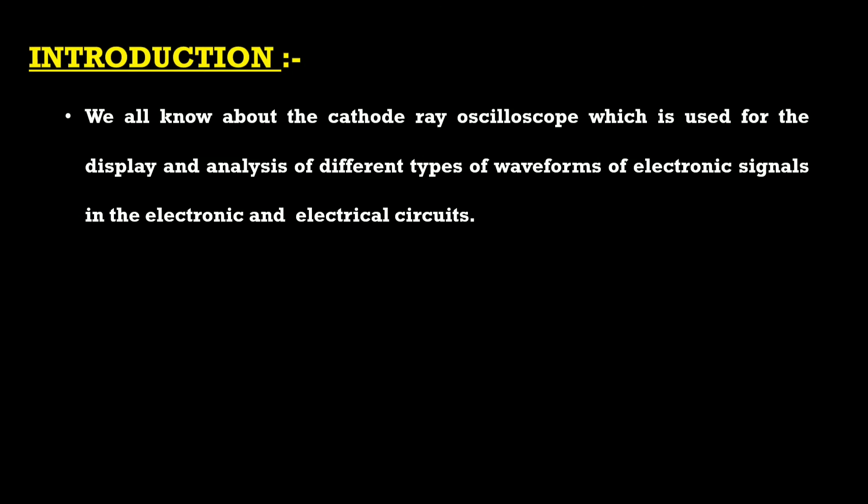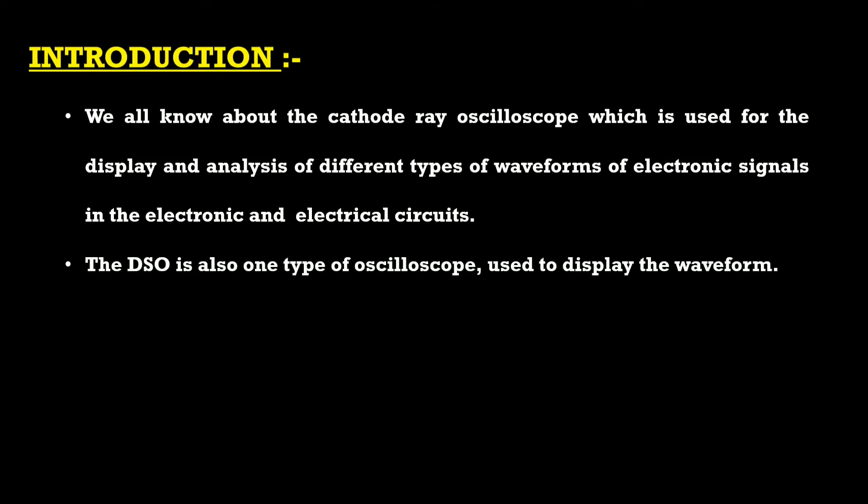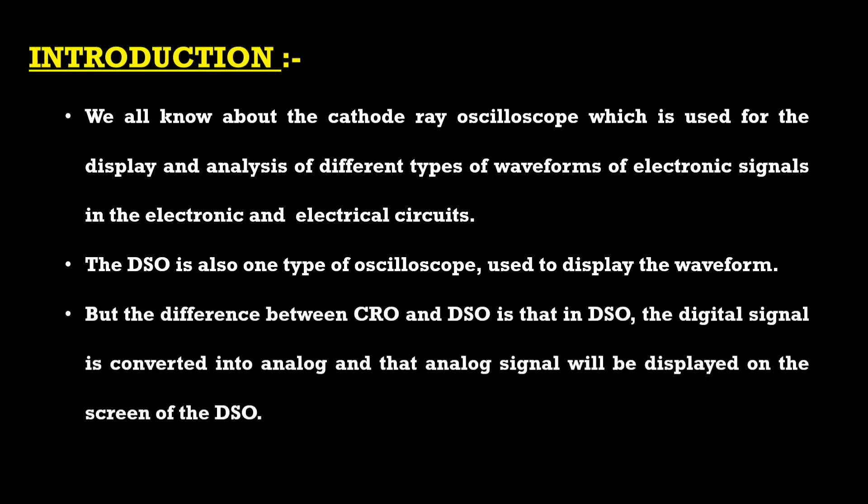We all know about the Cathode Ray Oscilloscope, or CRO, which is used for the display and analysis of different types of waveforms of electronic signals in electronic and electrical circuits. The DSO is also a type of oscilloscope used to display waveforms, but there is a key difference between the CRO and the DSO.